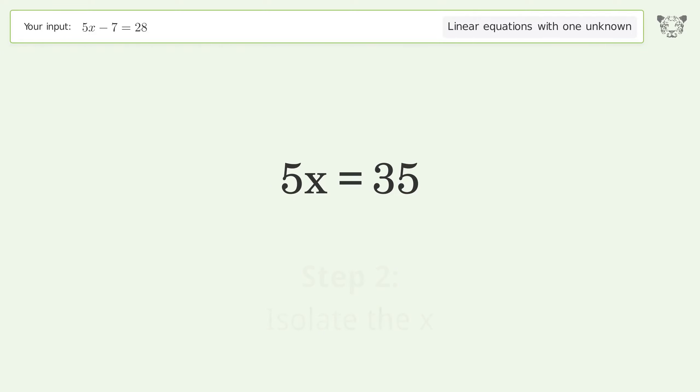Isolate the x. Divide both sides by 5. Simplify the fraction.